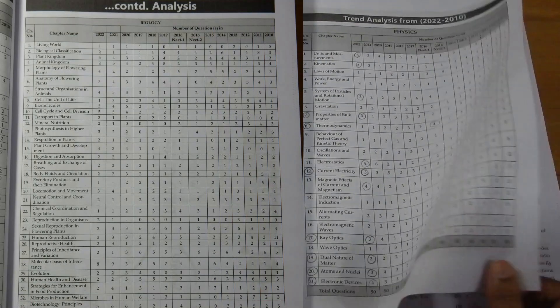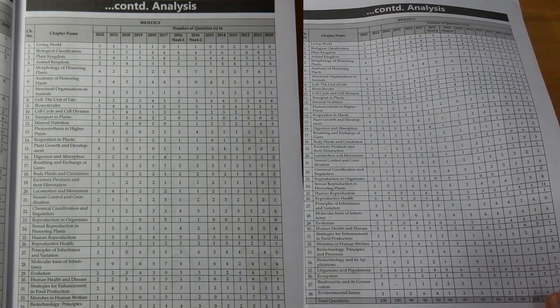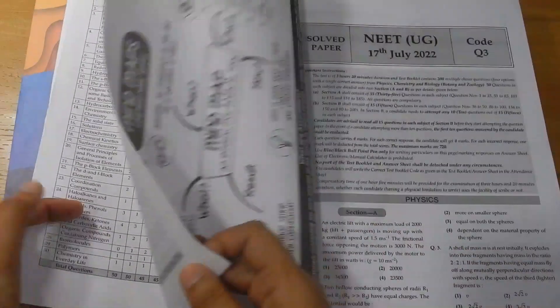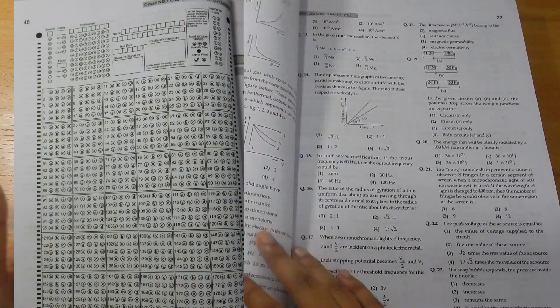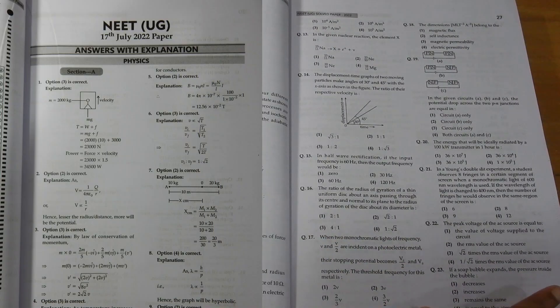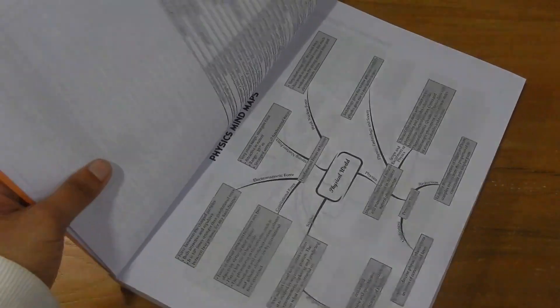Next you will get NEET 2022 and 2021 solved papers with OMR sheet and answers with explanation. These mind maps of each chapter in each subject are a single snapshot of the entire syllabus and will help you in quick revision and retention.